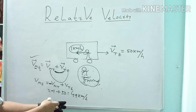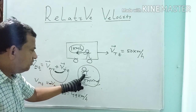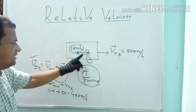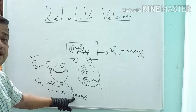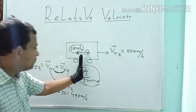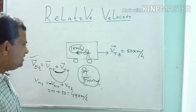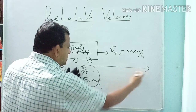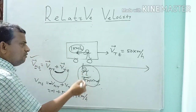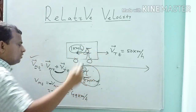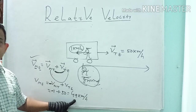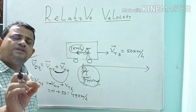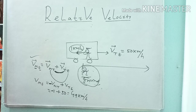What does it mean? That person on the ground will observe that the person inside the train is 49 km away in one hour from that place — meaning in one hour, that person covers 49 km. In this way, you calculate relative velocity of one with respect to another.